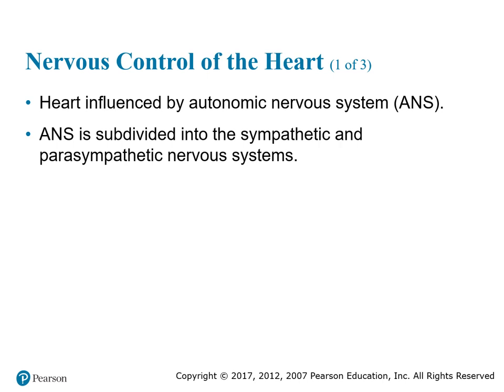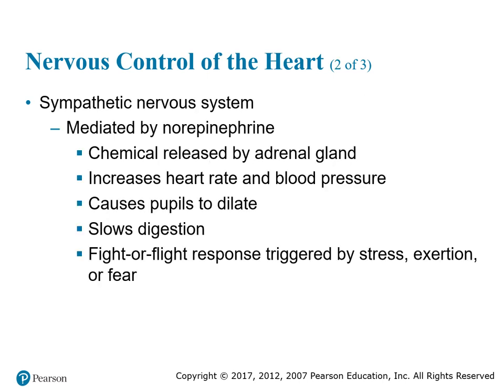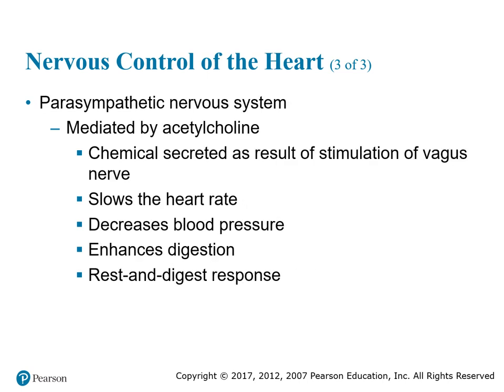Nervous control of the heart: the heart is influenced by the autonomic nervous system (ANS), which is subdivided into the sympathetic and parasympathetic nervous systems. The sympathetic nervous system is mediated by norepinephrine released by the adrenal gland; it increases heart rate and blood pressure, causes pupils to dilate, slows digestion, and triggers the fight-or-flight response under stress, exertion, or fear. The parasympathetic nervous system is mediated by acetylcholine, secreted as a result of vagus nerve stimulation; it slows heart rate, decreases blood pressure, enhances digestion, and governs the rest-and-digest response.